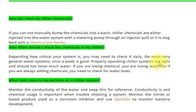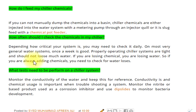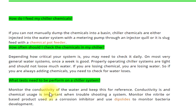Properly operating chiller systems are tight and should not lose much water. If you are losing chemical, you are losing water. So if you are always adding chemicals, you need to check for water losses.